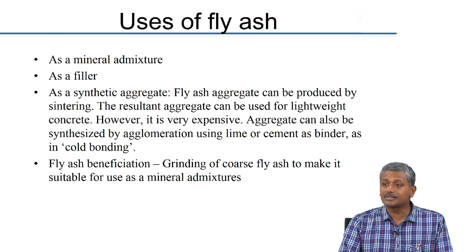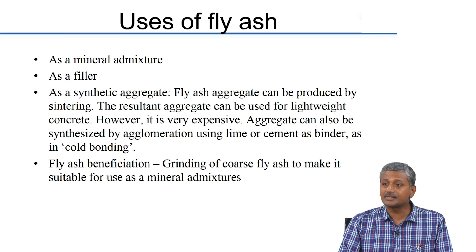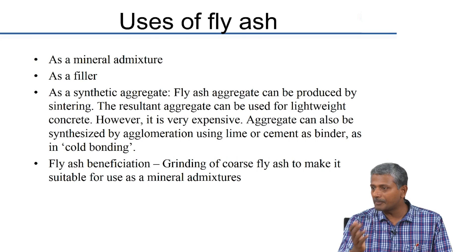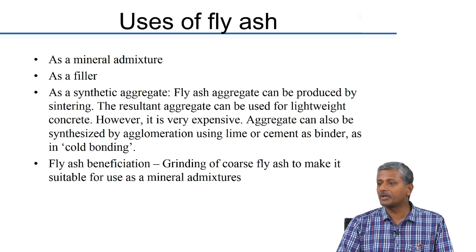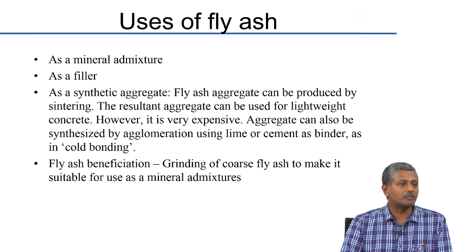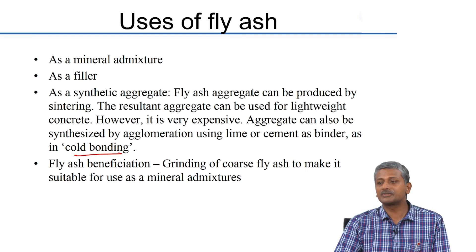If you have type C fly ash, which is high calcium fly ash, you can form these aggregates by simply pelletizing and curing just like normal concrete, because you end up forming CSH through pozzolanic and cementitious reactions. That process is called cold bonding because it happens at regular temperatures — you do not need to heat up the fly ash at all.